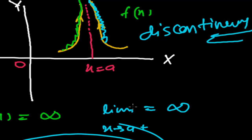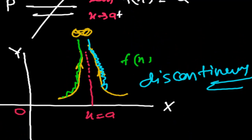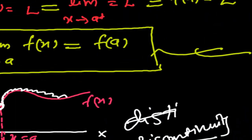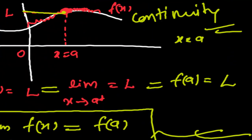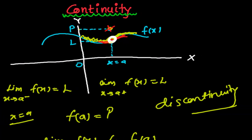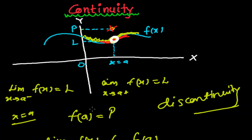These are the conditions by which we can easily determine whether a function is continuous or not. I hope you have a good idea about continuity — what continuity exactly is and how to find whether a function is continuous or not. In the next video we'll be doing some examples and problems related to continuity. Bye-bye, see you in the next video.